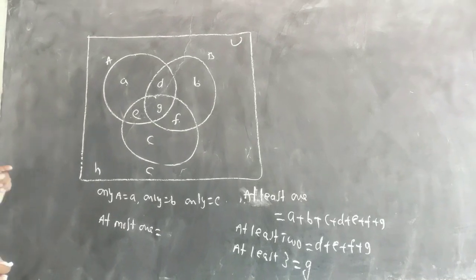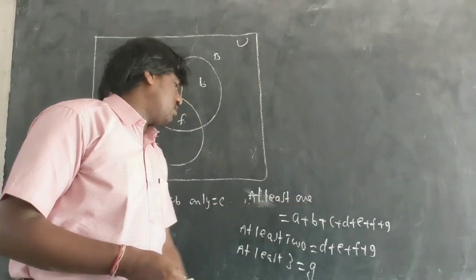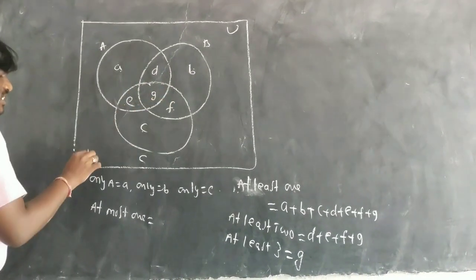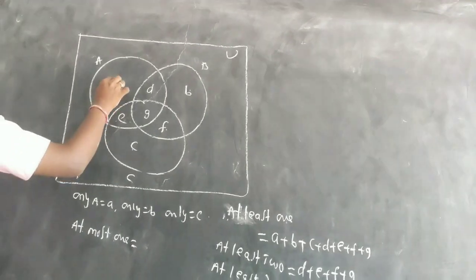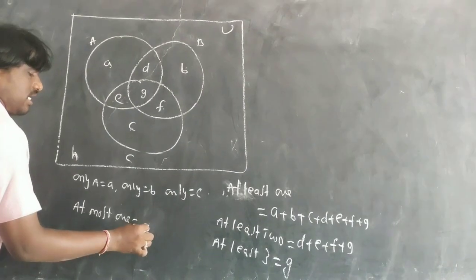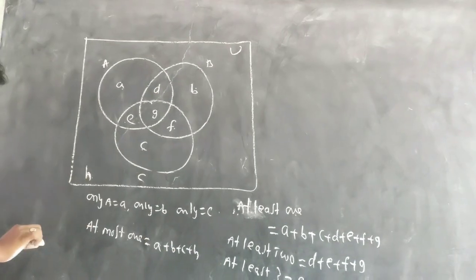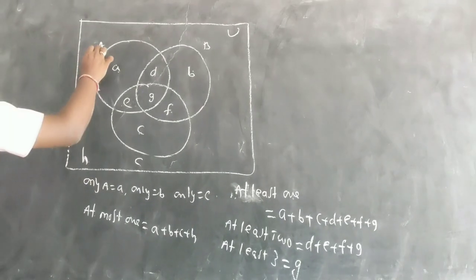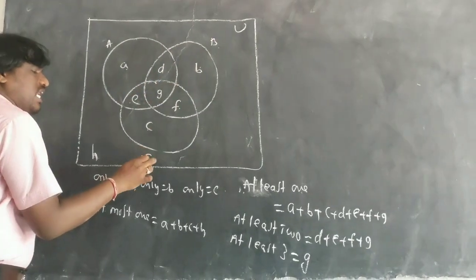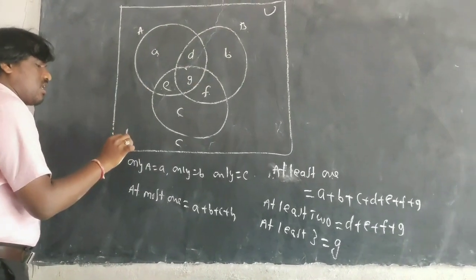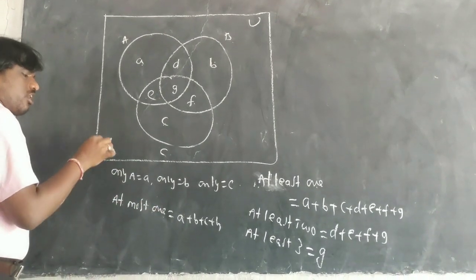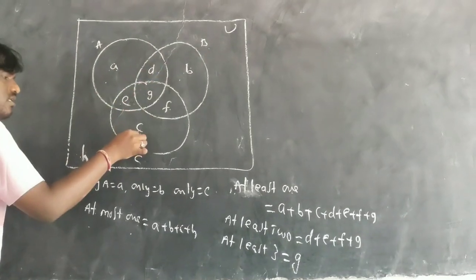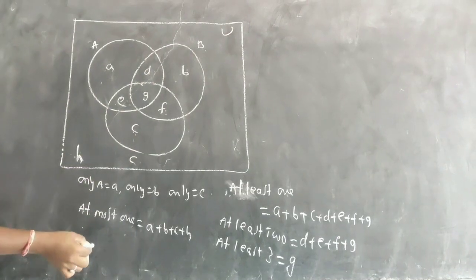At least one means one and more than one. At most means zero and one. For example, if you have three games — cricket, football, tennis — those not playing any of the three are called 'none,' that is H, outside. At most one means those not playing and those playing only one. At most two means those not playing, those playing exactly one, and those playing exactly two.